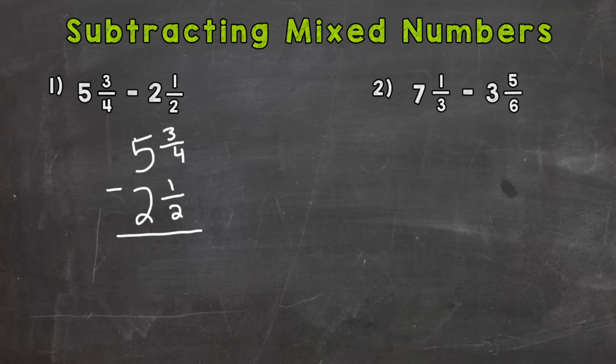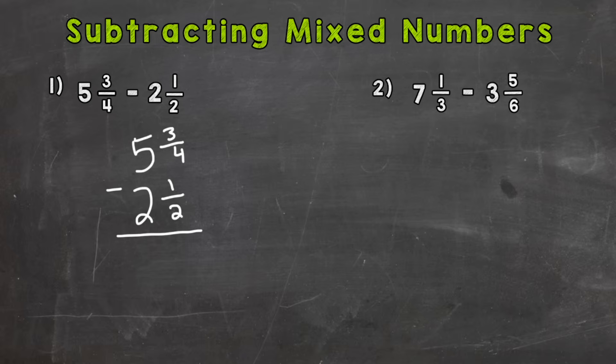Now we need to subtract the fractional part first. Just like when we add or subtract fractions, we need a common denominator. With a denominator of 4 and 2, we don't have the same denominator, so we're going to need to rename both fractional parts with a common denominator. What's going to be our common denominator for 4 and 2? Hopefully you're thinking 4. Now 5 and 3/4 already has a denominator of 4, so we can keep it as is.